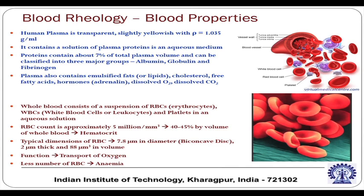The hematocrit H, expressed by volume percentage, is about 40 to 45 percent, but it is not constant — it will vary from one individual to another and from one diseased condition to another. Based on the hematocrit, it is possible to describe the rheology of the blood sample. Typical dimensions of RBC are about 7.8 micron in diameter.